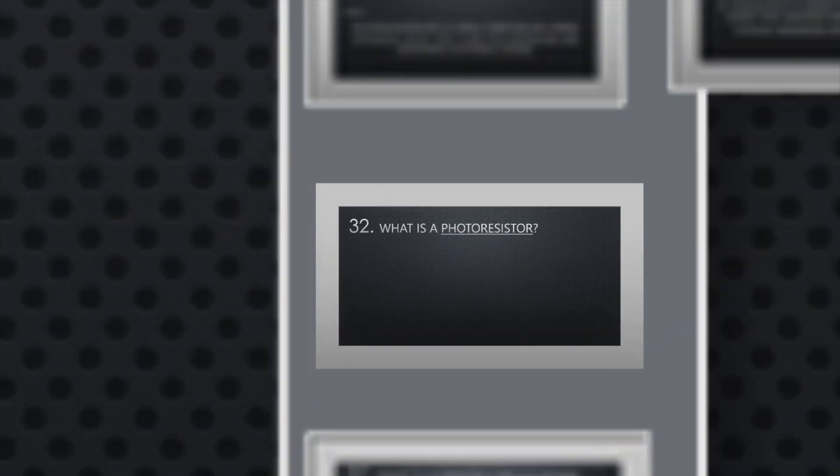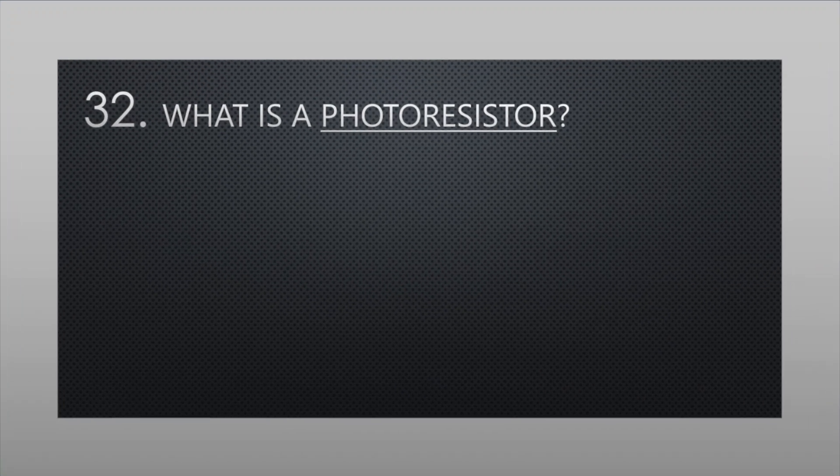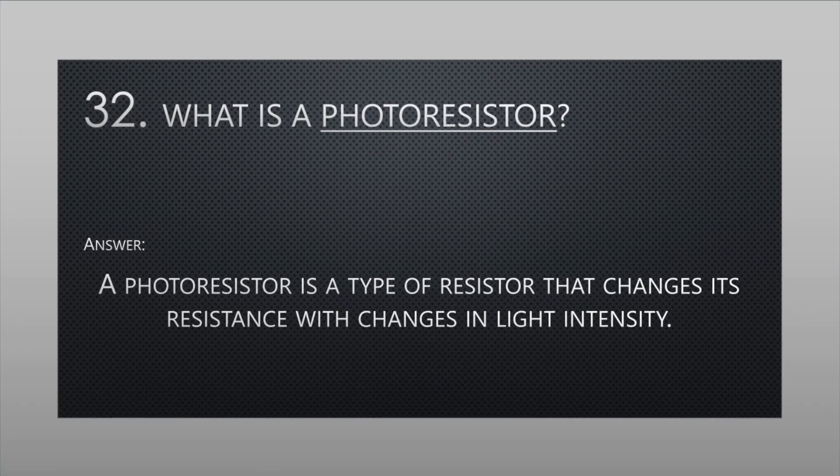What is a photoresistor? A photoresistor is a type of resistor that changes its resistance with changes in light intensity.